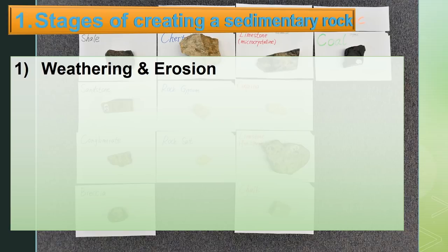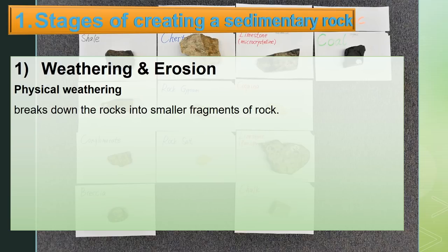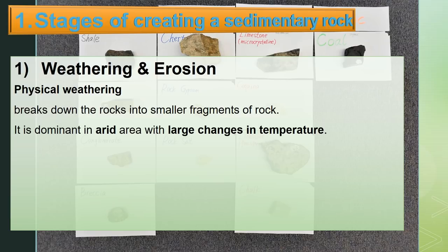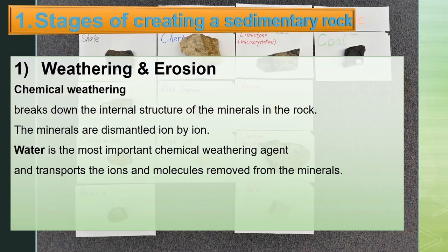First, weathering and erosion. There are two types of weathering. First is mechanical or physical, and second is chemical. Physical weathering breaks down rocks into smaller fragments. It is dominant in arid areas with large changes in temperature. Chemical weathering breaks down the internal structure of minerals in the rock — the minerals are dismantled ion by ion. Water is the most important chemical weathering agent and transports the ions and molecules removed from the minerals.